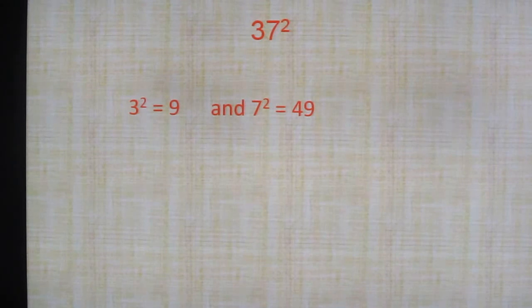First let us find out what is 3 square. What is 3 square? 9. What is 7 square? 49. So this 3 square just write, this 3 square is 9, this 7 square is 49. Just write it down. So 9 and 49.